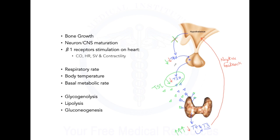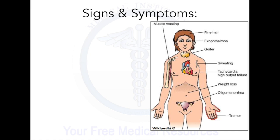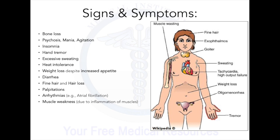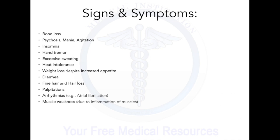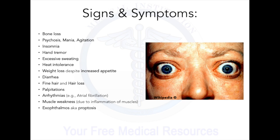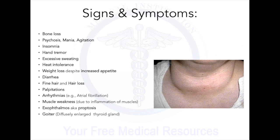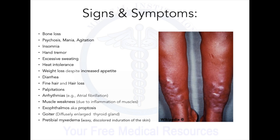So everything that affects the body from thyroid hormones will increase in Graves' disease, leading to many signs and symptoms including bone loss, psychosis, mania, agitation, insomnia, tremor, excessive sweating, heat intolerance, weight loss despite increased appetite, diarrhea, fine hair and hair loss, palpitations, arrhythmias such as atrial fibrillation, and muscle weakness. We can also see exophthalmos or proptosis — bulging of the eyes due to inflammation of the eye muscles — which can be unilateral or bilateral, as well as goiter and pretibial myxedema.